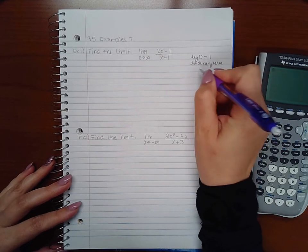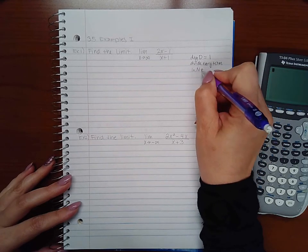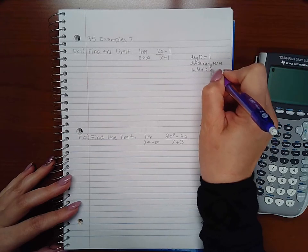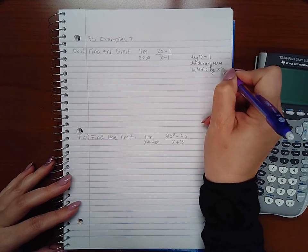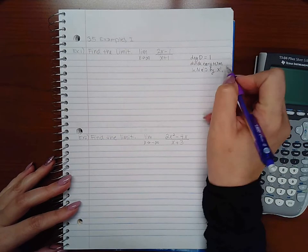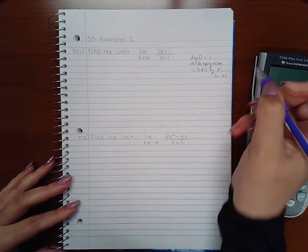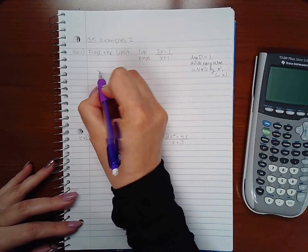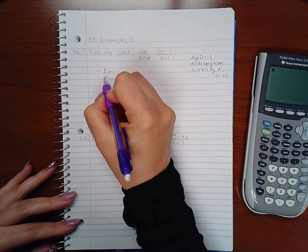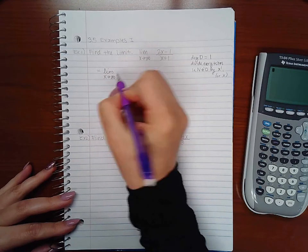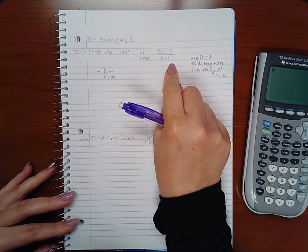So what I'm going to get here is this limit actually is equal to... and as long as you're doing something to the numerator and the denominator, it does keep the fraction equal.